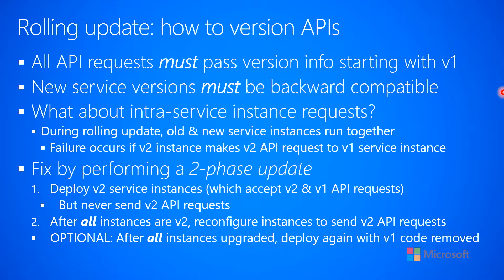In order to make that work correctly and be able to upgrade your protocols, you have to do what's called a two-phase update, and that's what I'm going to talk about here now. I've been talking about APIs and how all API requests must pass a version number, and you really start doing that starting with version 1 of your service — be thinking about versioning from the very beginning, not when it's time for version 2.